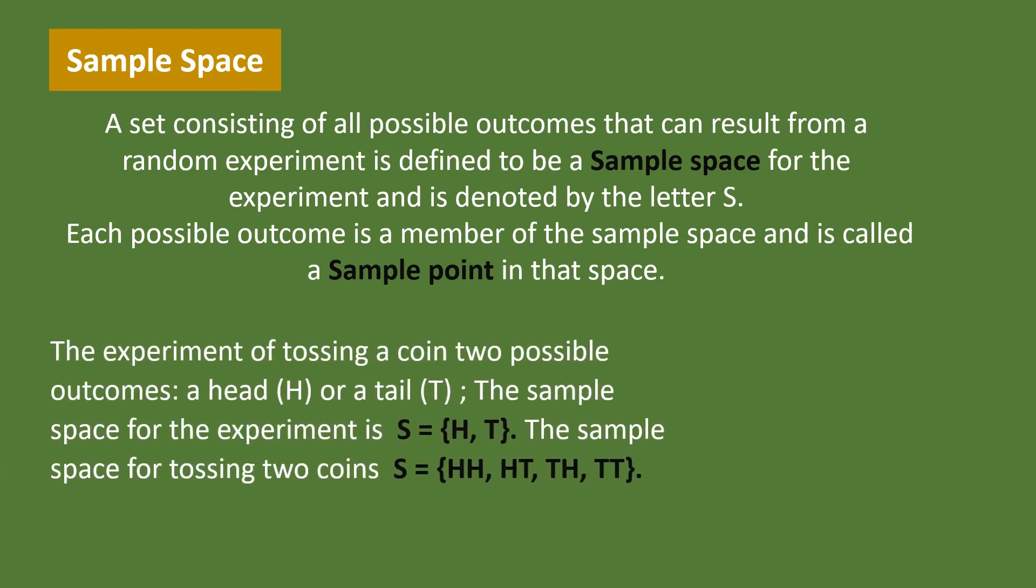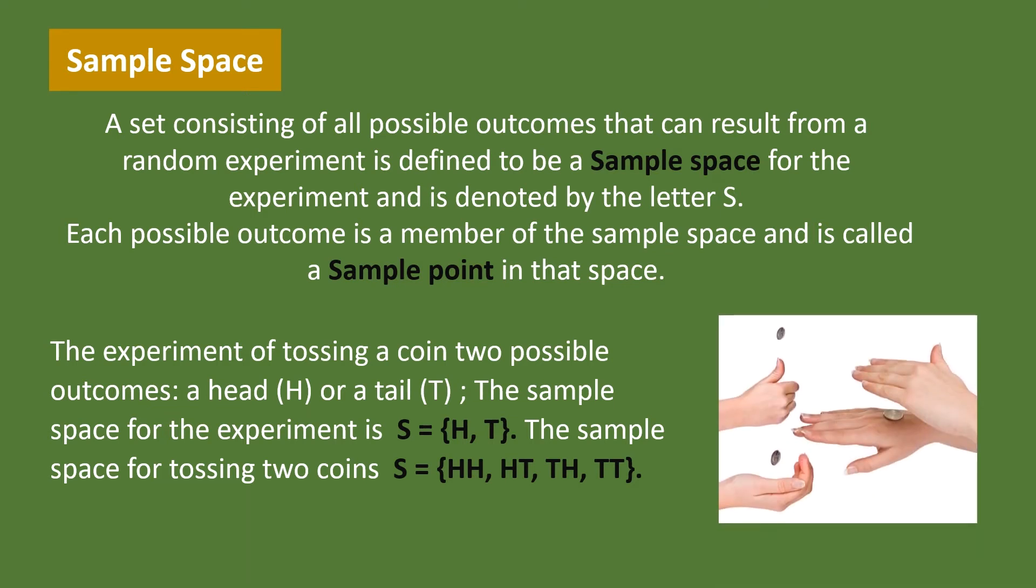For example, the experiment of tossing a coin has two possible outcomes: a head and a tail. The sample space for the experiment is S equals H, T. The sample space for tossing two coins, S equals HH, HT, TH, TT. There are four possible outcomes if we toss two coins.